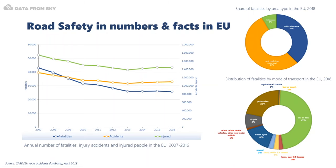Almost half of the fatalities are caused by cars, but also vulnerable road users such as unprotected cyclists, pedestrians, and motor bikers account in total for almost half of road accident victims, especially in urban areas. Looking at these numbers, we at Data from Sky have asked ourselves: how can we help to increase safety on the roads?